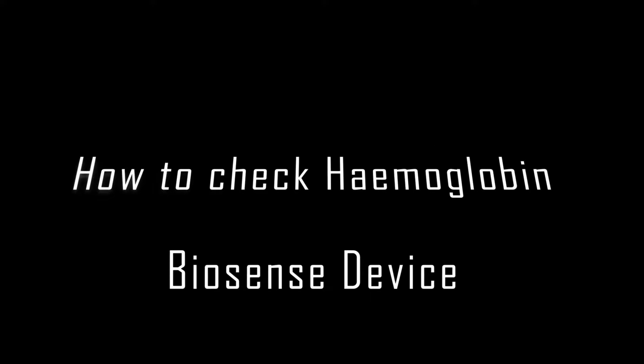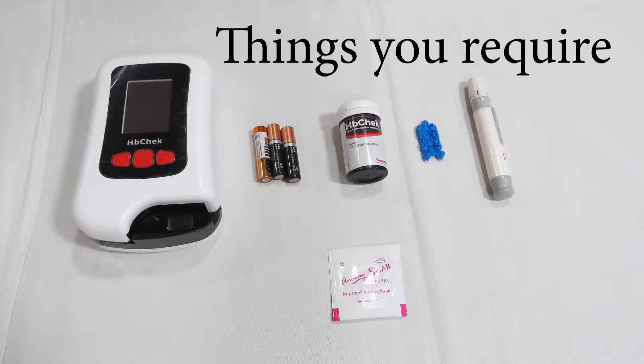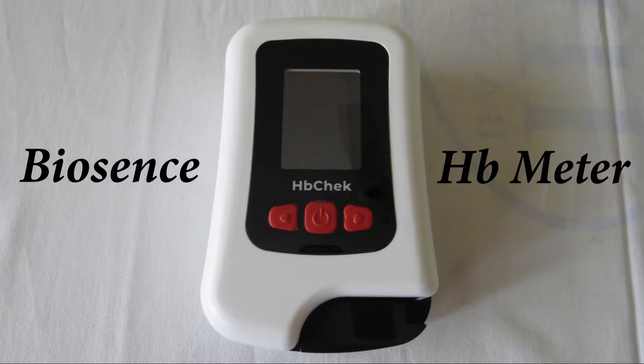How to check hemoglobin using the biosense HB check device. The things you require are the biosense HB machine, HB strips, lancing device, lancets, and alcohol swabs.